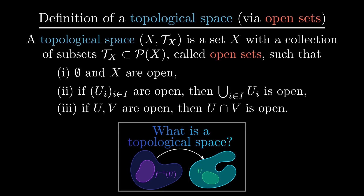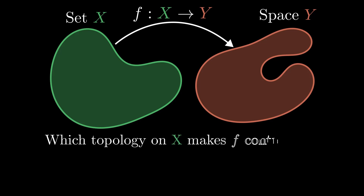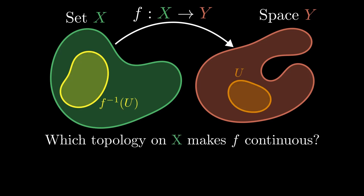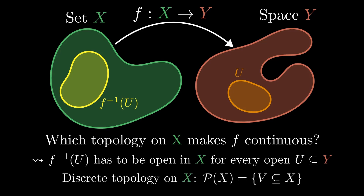We will start with the following problem. We are given a set x, a topological space y, and a map from x to y. Which topology on x can we choose such that f is continuous? f is continuous if the preimage of every open set is open. So in the topology on x, every preimage of an open set has to be open. So if we choose the discrete topology on x where every subset is open, the map f would be continuous.